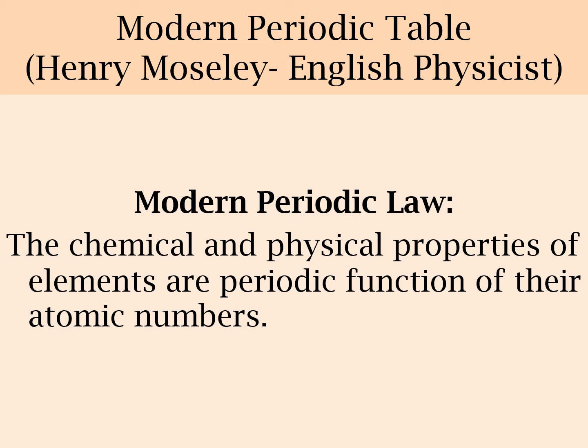Henry Moseley said that the atomic number is a more fundamental property of the element than its atomic mass. This was true because the atomic number, even in isotopes of the same element, remains the same. So atomic number is a more fundamental property than atomic mass. From then onwards we got the modern periodic law, which stated that the chemical and physical properties of elements are a periodic function of their atomic number — meaning that when elements are arranged in increasing order of atomic number, elements with similar properties are repeated after a definite interval.